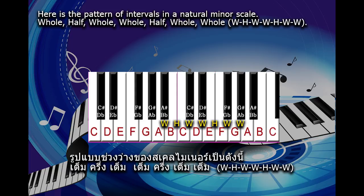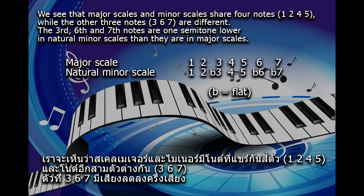Here is the pattern of intervals in a natural minor scale: whole, half, whole, whole, half, whole, whole. We see that major scales and minor scales share four notes — one, two, four, five — while the other three notes — three, six, seven — are different. The third, sixth, and seventh notes are one semitone lower in natural minor scales than they are in major scales.